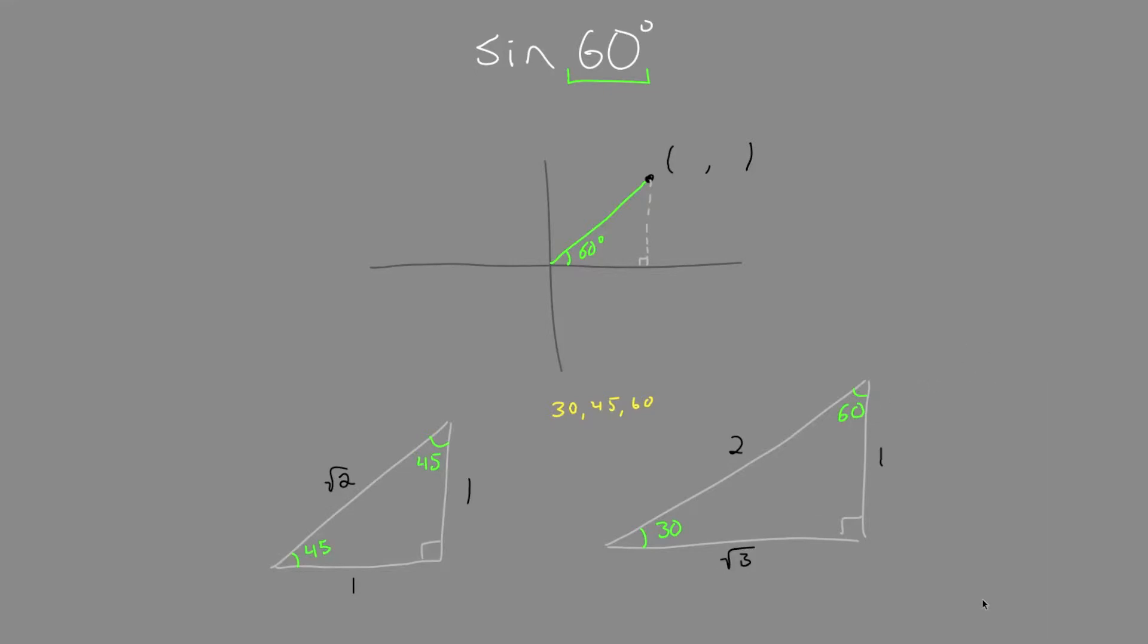These are the special triangles that you have to remember for all angles of 30, 45, and 60. So we'll have an x value of 1 and a y value of root 3. And that's our coordinate.